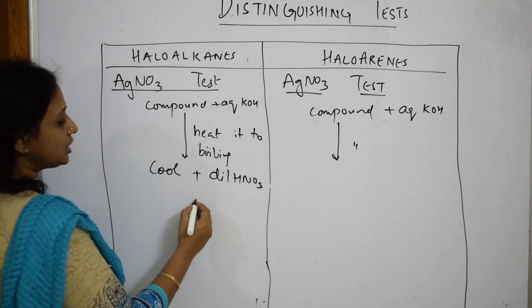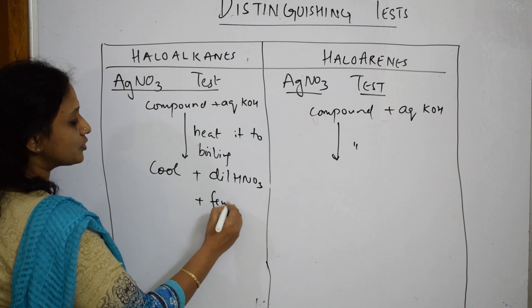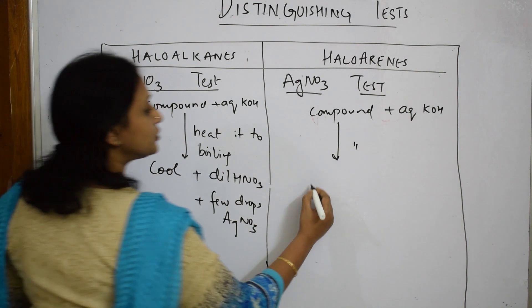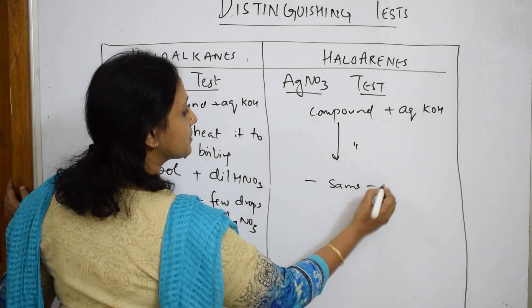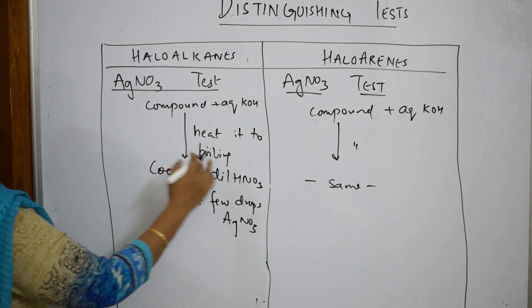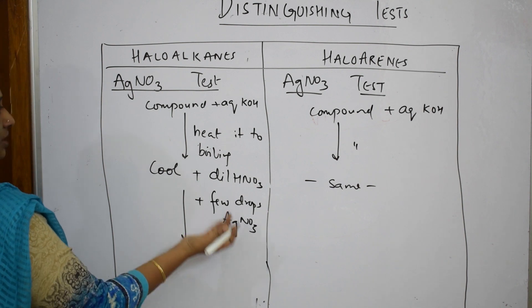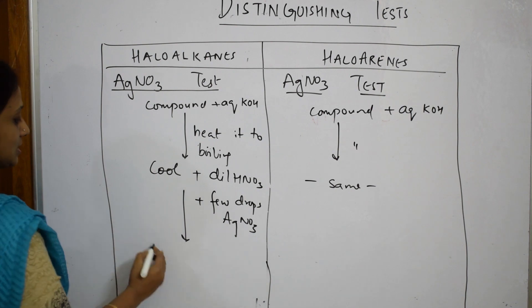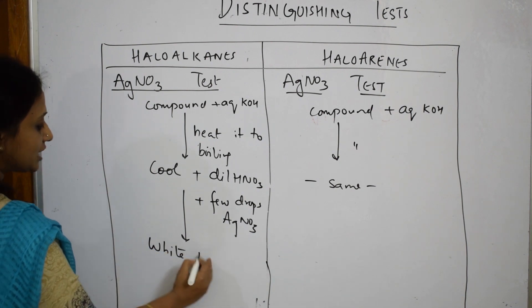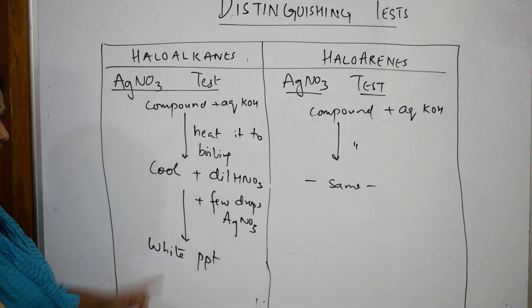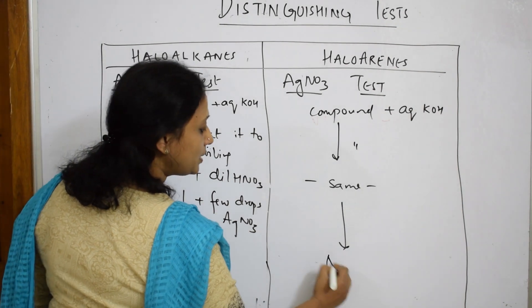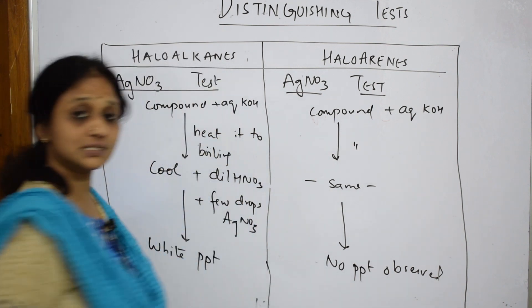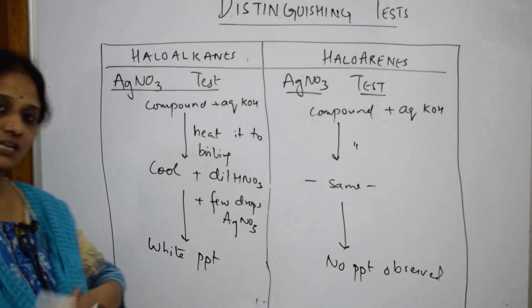Once you cool the solution, you add dilute HNO3 along with a few drops of silver nitrate. You do the same step for both compounds. Now, silver nitrate forms a white color precipitate with haloalkanes, so you get a white precipitate here, but no precipitate is observed with haloarenes.